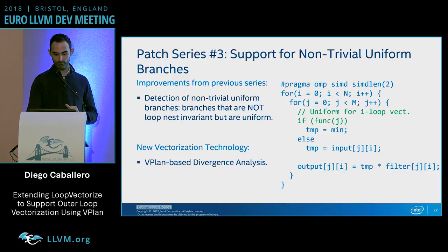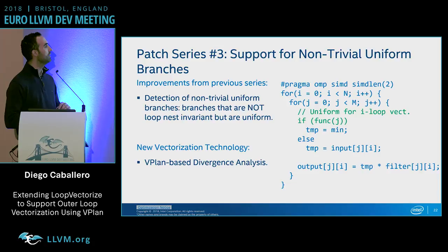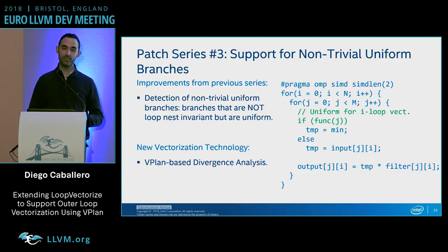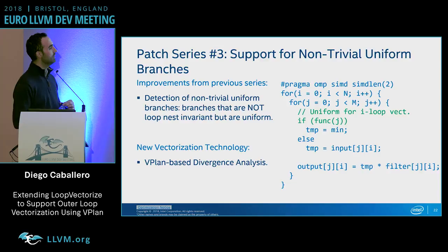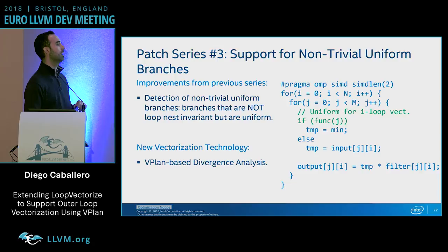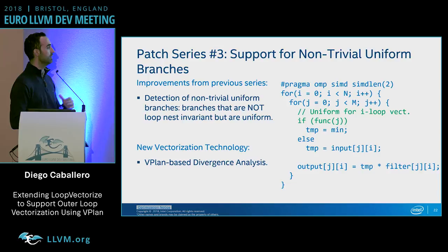In patch series three, we introduce technology to detect more sophisticated uniform branches — ones that are not loop-nesting invariant but still uniform. For example, a branch that depends on the induction variable of the inner loop but is uniform with regard to the outer loop's vectorization. To detect these, we need more sophisticated analysis such as divergence analysis.